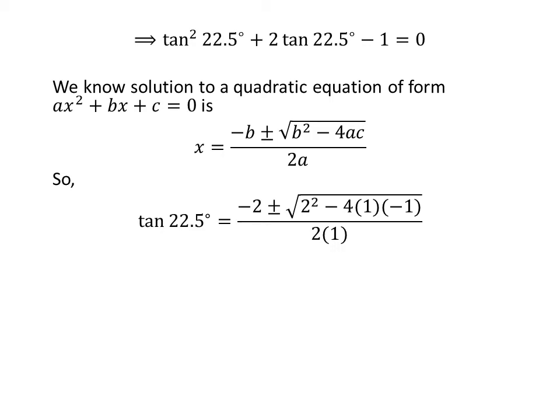Comparing our equation with the general form, we get a is equal to 1, b is equal to 2, and c is equal to minus 1. Plugging the values of a, b, and c, we get tangent of 22.5 degrees is equal to minus 2 plus or minus square root of square of 2 minus 4 times 1 times minus 1, upon 2 times 1. Simplification gives us tangent of 22.5 degrees is equal to minus 2 plus or minus square root of 8, upon 2.